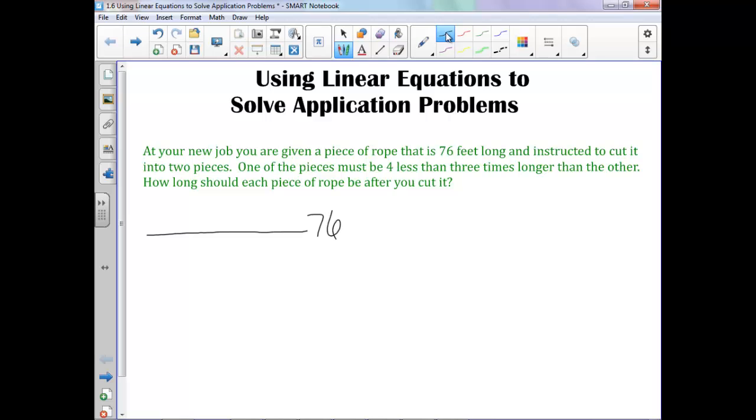So we know we're cutting it in two pieces. One of the pieces is four less than three times longer than the other. So we don't know how long this first piece is, so let's just call this part X. We know the second one is four less than, which means it's something minus four, and it's four less than three times longer than the other. So we know our first cut is X and our second cut is 3X minus four. We know both of these lengths together has to be our total of 76 feet. So our equation is just X plus the 3X minus four equals 76.